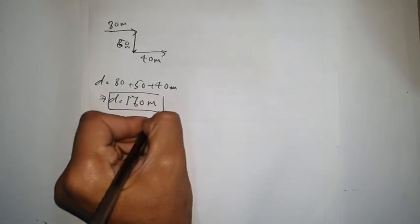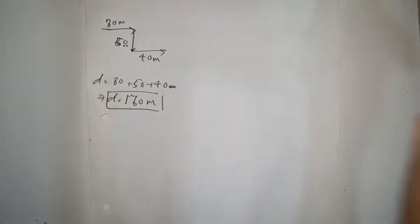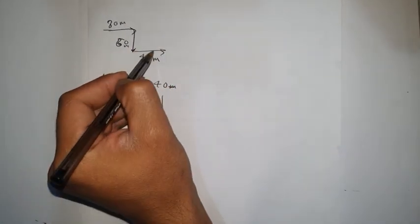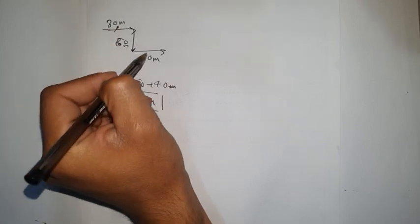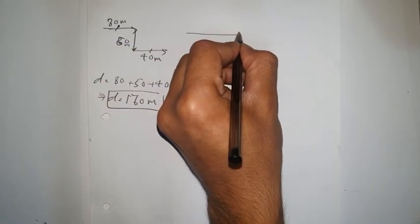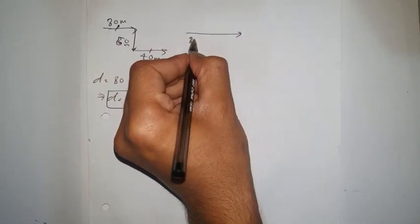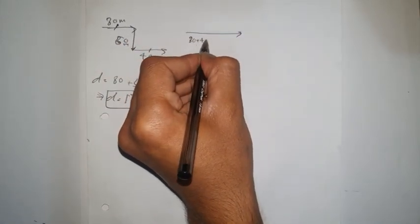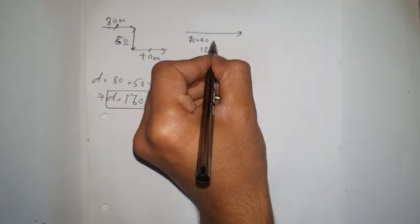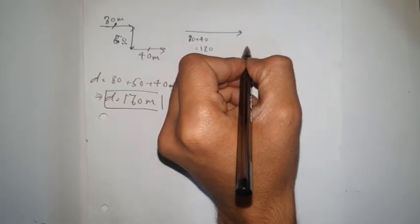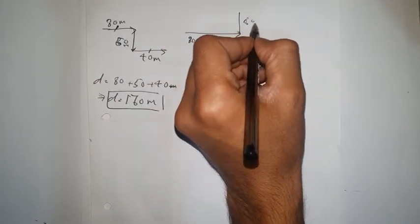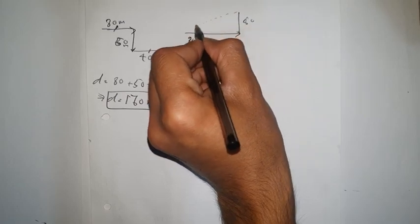Now we're going to find the displacement. We look at the directions: the 80 and 40 are in the same direction, so we add them — 80 plus 40 equals 120. The 50 is in the perpendicular direction, so that component is 50. Now we're going to find the displacement using the Pythagorean theorem formula.